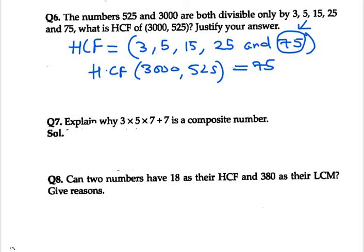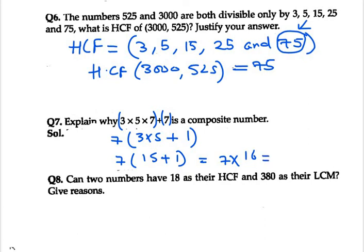In this we have 3×5×7+7, so what we can take common is 7. Now we are left with, the first term is 3×5 and the second term will be 1 because we have taken 7 out. So 3×5 is 15, 15+1, so we have 7×16.